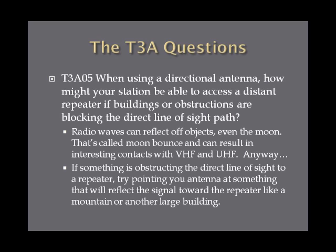When using a directional antenna, how might your station access a distant repeater if buildings or obstructions are blocking the direct line of sight path? Radio waves can bounce off objects — even the moon, which is a different subject. If something obstructs the direct line of sight to a repeater, try pointing your antenna at something that will reflect signals toward that repeater, like a mountain or large building, with the right angle and enough power.